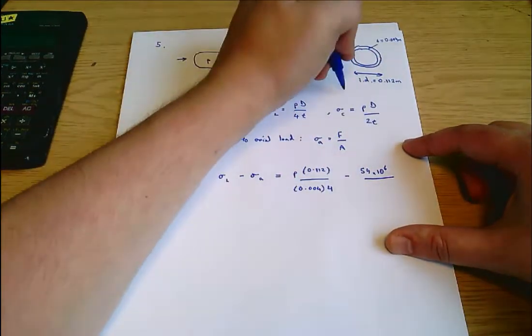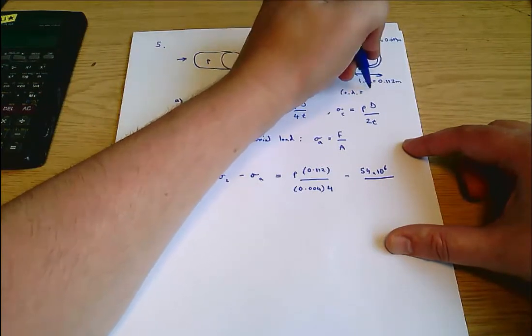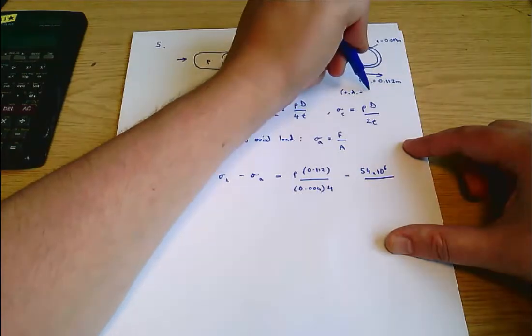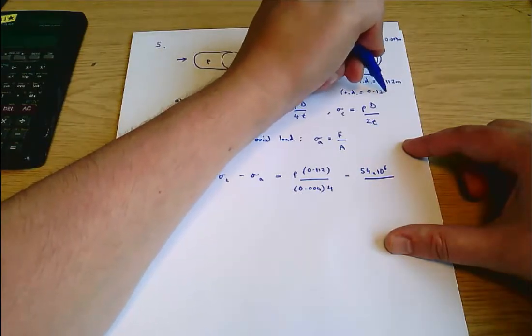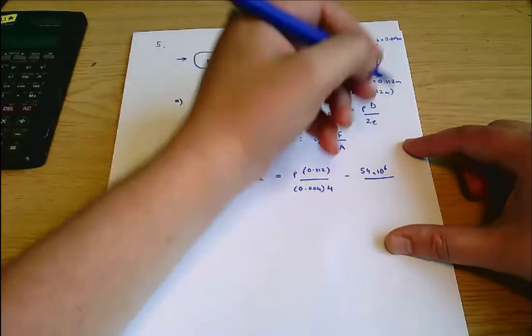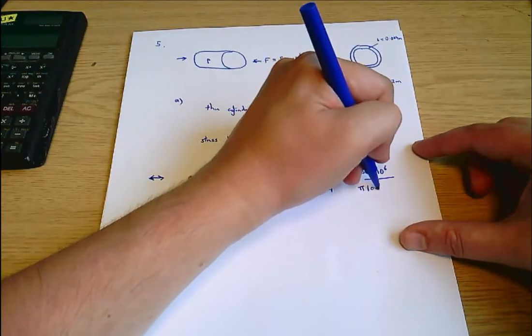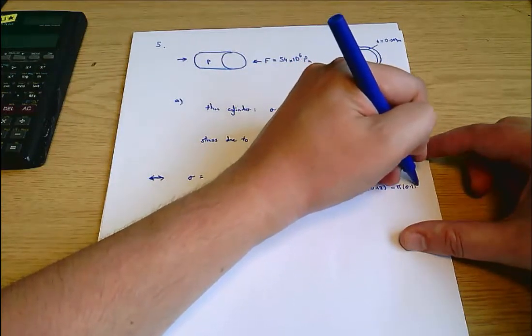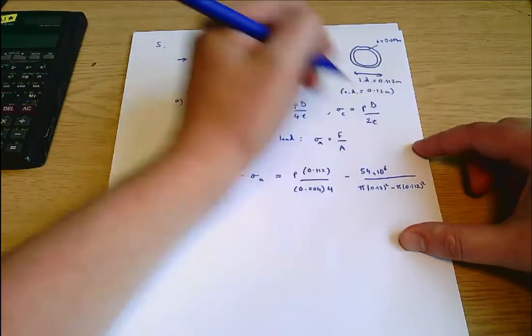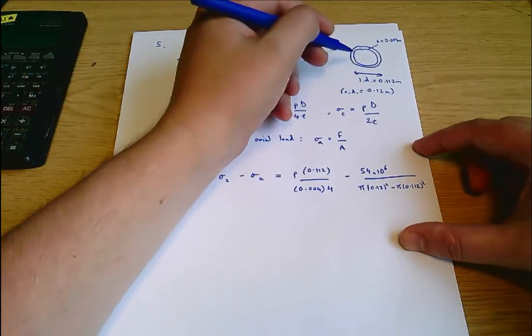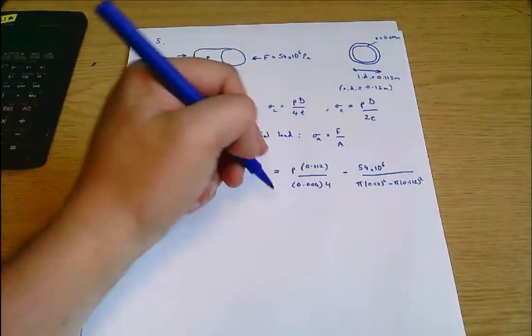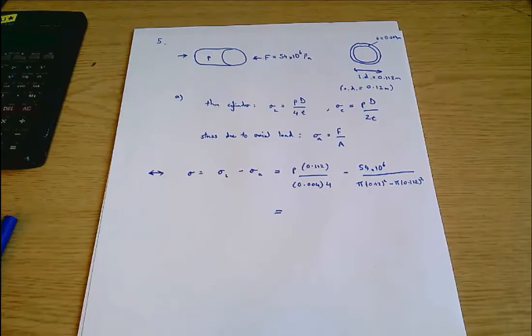The outer diameter here is going to be 0.112 plus 2 times the thickness, which is 0.12 meters. So this is pi 0.12 squared minus pi 0.112 squared. That's the area of the hoop, area of the circle with the outer diameter minus area of the circle with the inner diameter.